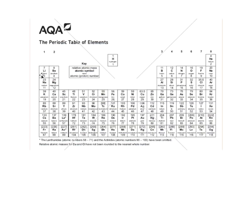A reminder about notation: element symbols with two letters have a capital first letter and a small second letter — for example lithium is Li. Some elements have only one letter, such as vanadium (V), carbon (C), and boron (B). The top number in an element's symbol is the mass number — the total number of protons and neutrons in the nucleus. The bottom number is the atomic number, or proton number, which tells you the number of protons in the nucleus. The atomic number also equals the number of electrons orbiting the nucleus, but the definition of atomic number is the number of protons.